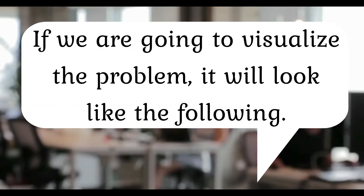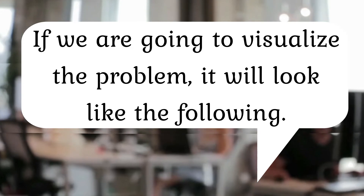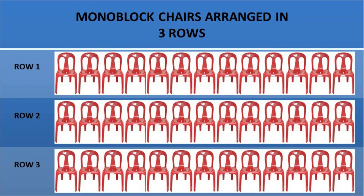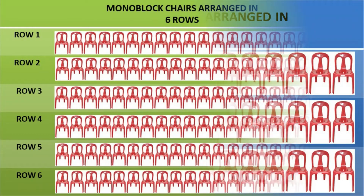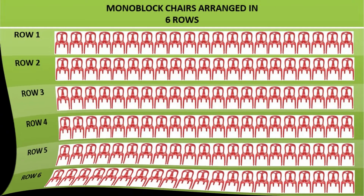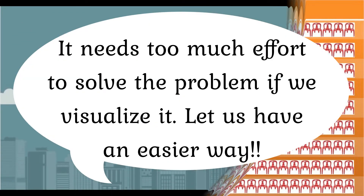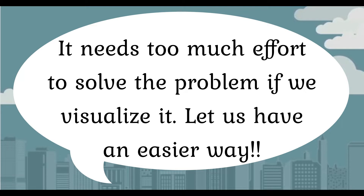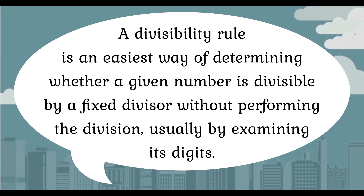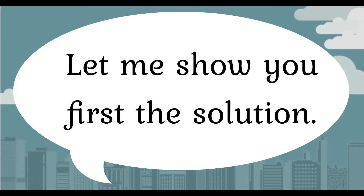If we are going to visualize the problem, it will look like the following: chairs in 3 rows, chairs in 6 rows, and chairs in 9 rows. It needs too much effort to solve the problem if we visualize it, so let us have an easier way. A divisibility rule is the easiest way of determining whether a given number is divisible by a fixed divisor without performing the division — usually by examining its digits. Let me show you the solution.